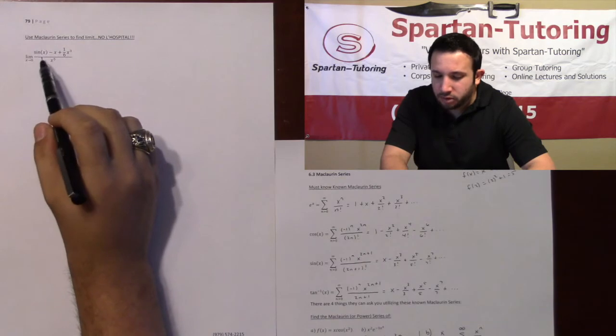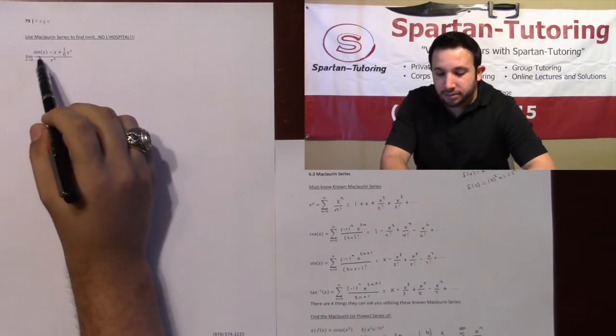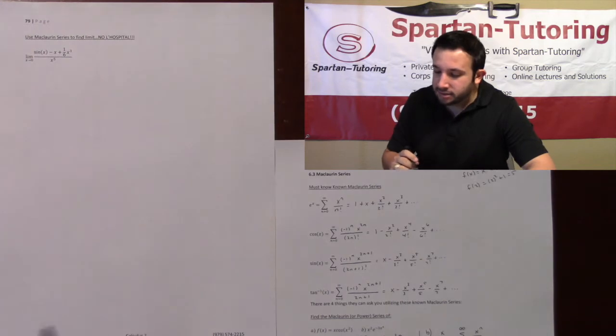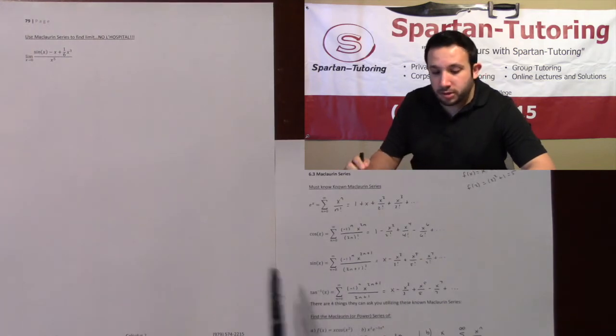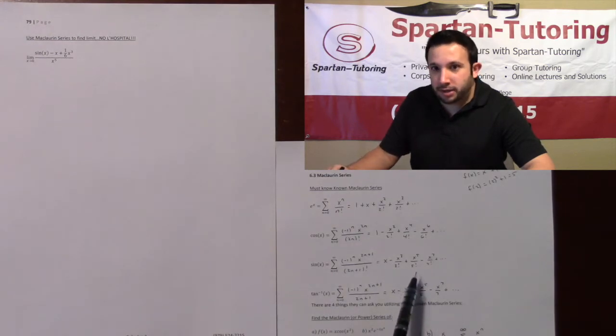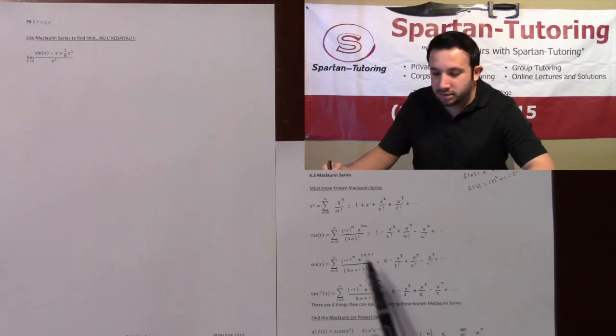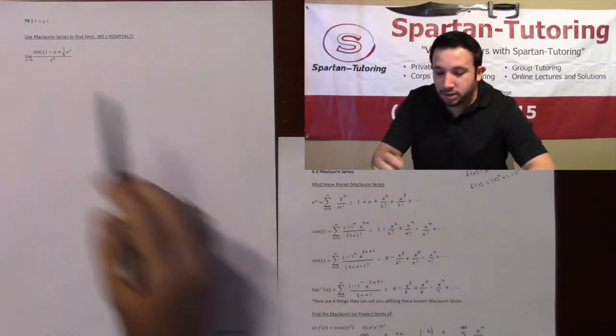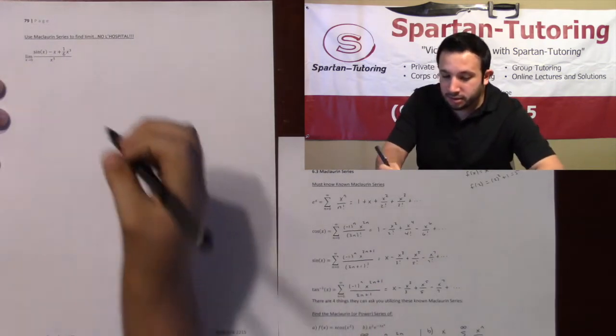In this limit, the function we have is sine x. What you're going to do first is replace your function with its expansion. This is where memorizing the expansion might be helpful. That way you don't have to write up the series and expand it yourself - you can just take this expansion and replace it.